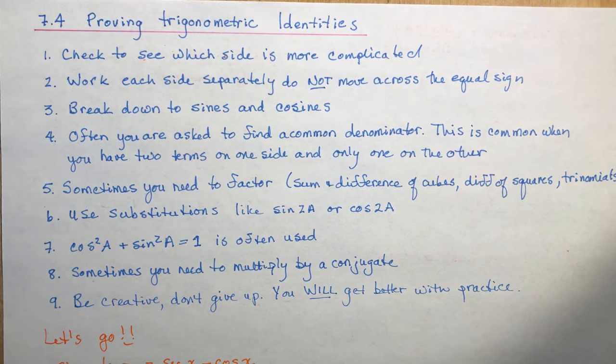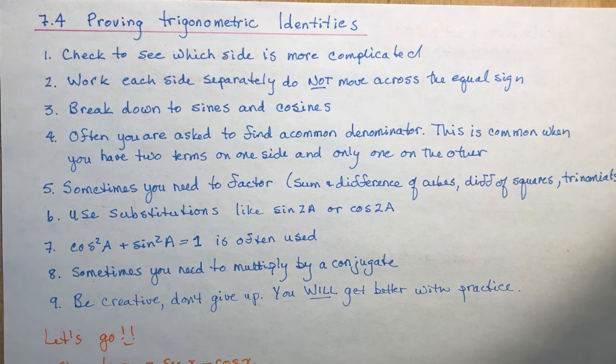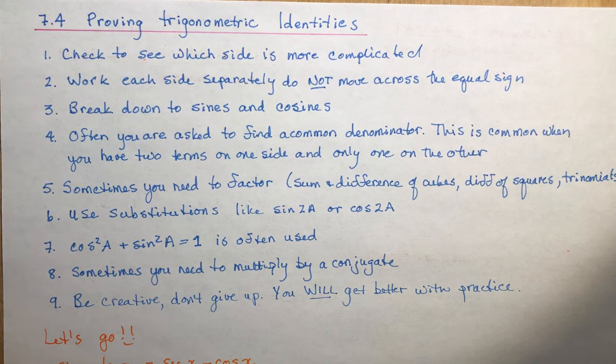7.4 Advanced Functions is Proving Trigonometric Identities. Now some people find this really hard, some people really like them. I think the more you do, the more you will like them.